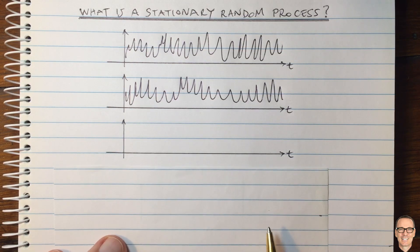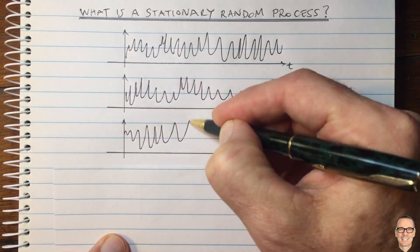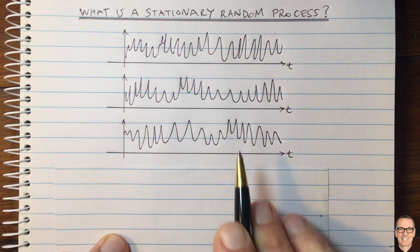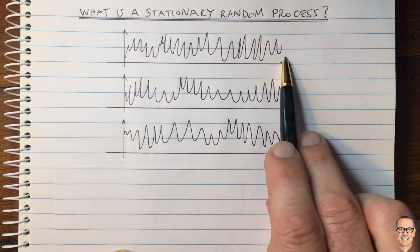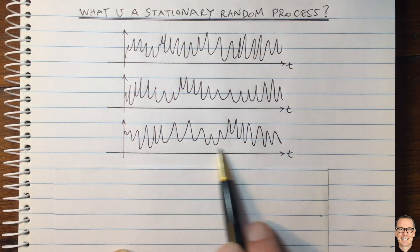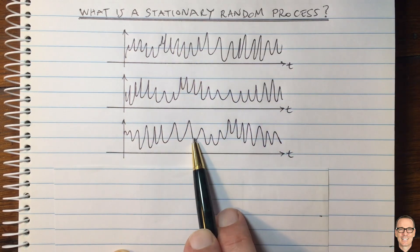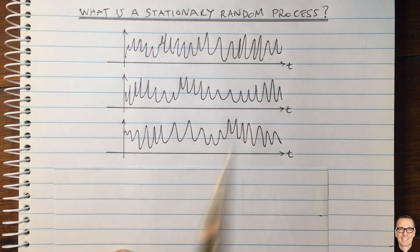If we measure it on a second day, and if we measure it on a third day, again, it will be a different value that we measure. So this is a random process. Every day that you take the measurement over the same period of time, you get a different function. It's a random function.